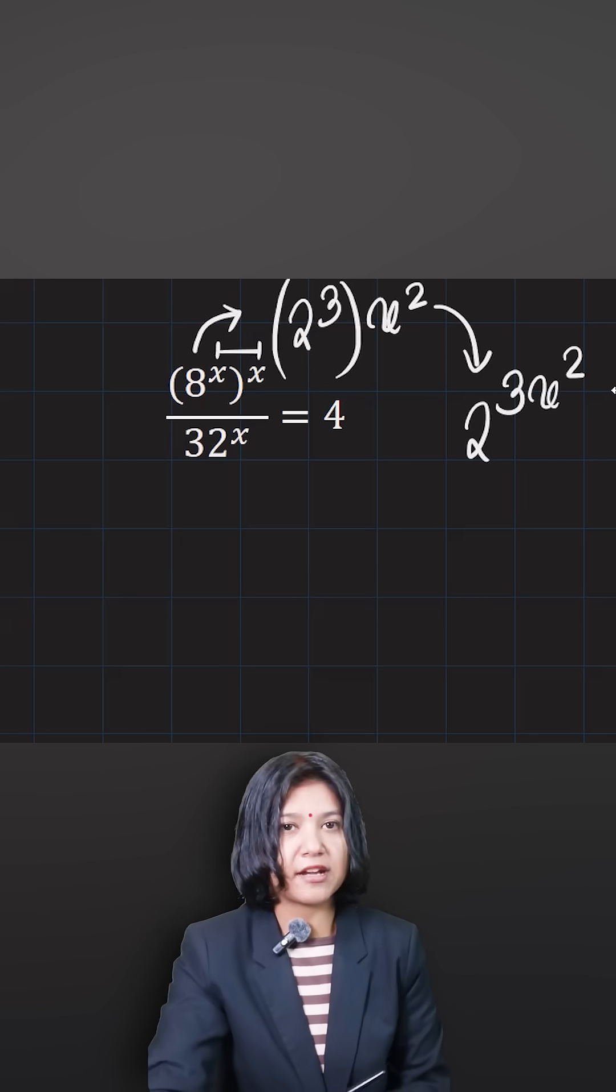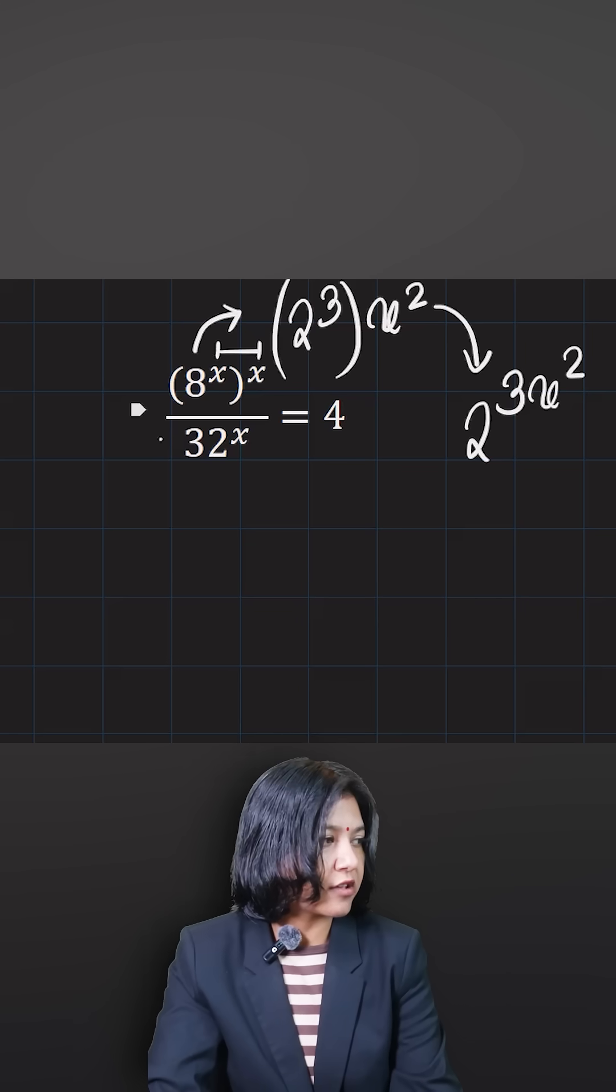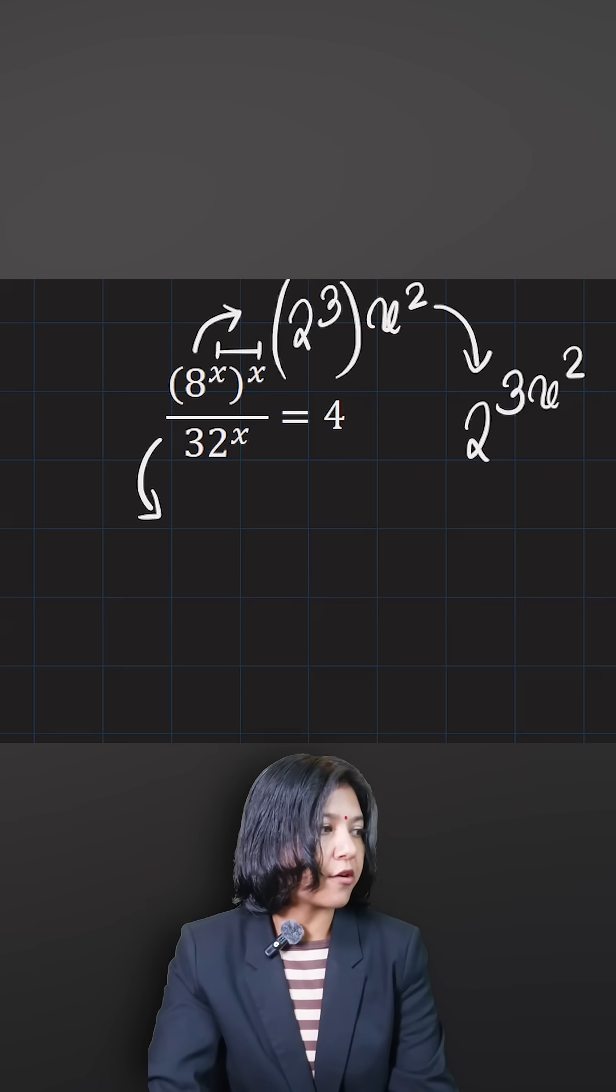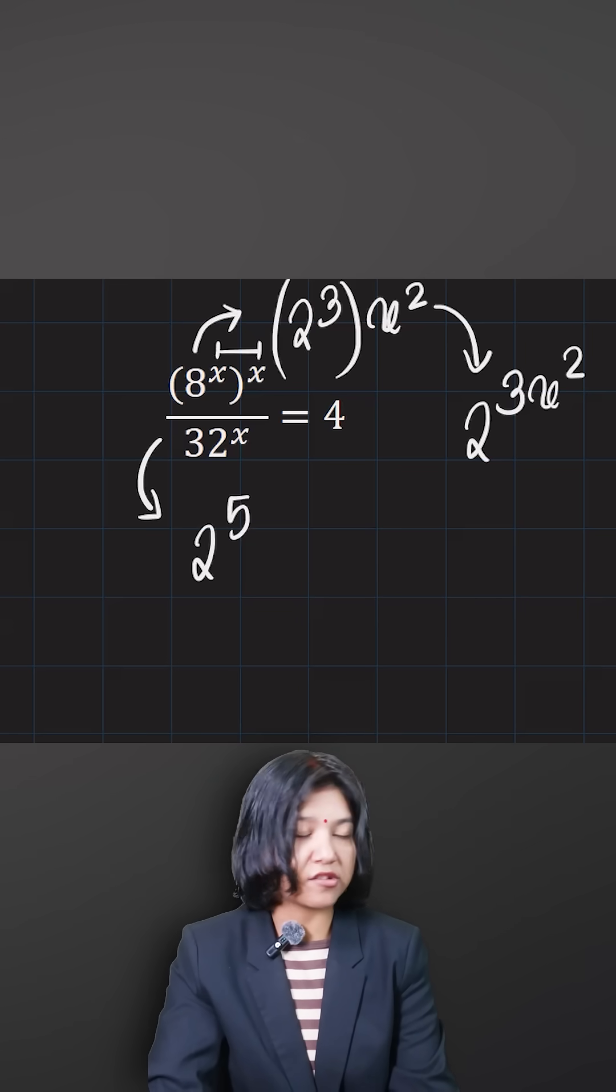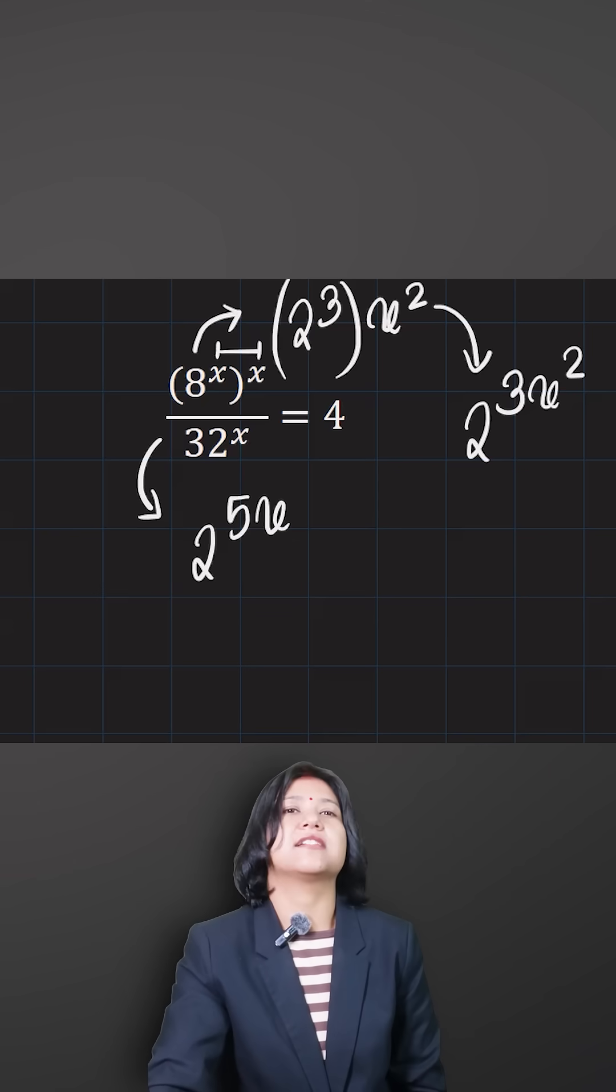That's the other way you write the term 8 to the power of x, whole to the power of x. Similarly, if you look at 32, it's 2 to the power of 5. The fifth power of 2 is 32, and then there's an existing power which is x. So I'm going to multiply straight and write that as 5x.